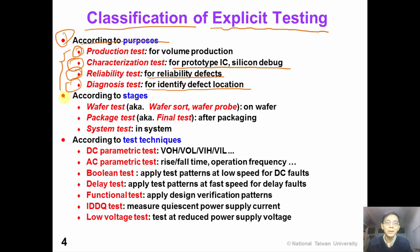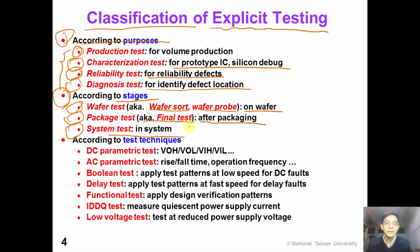Explicit testing can also be classified according to the stages when the testing is performed. For example, wafer test is also known as wafer sort or wafer probe, and is performed on the wafer before the ICs are packaged. On the other hand, package test is also known as final test, which is performed after the ICs are packaged. And system test is performed when the IC is plugged into the system.